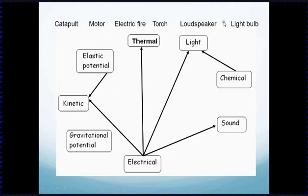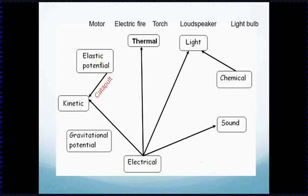Here are the different sorts of energy with some arrows — these represent devices which change energy from one sort to another. A catapult, for example: when you pull it back it has elastic potential energy, and when you release it that turns into kinetic energy. The chemical energy in your body is what gives you the energy to pull it back. When it hits something, that kinetic energy will probably turn into sound or thermal energy.